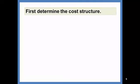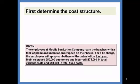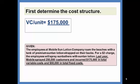Now to do CVP analysis, we're going to first need to determine the cost structure. When you look at this problem and what's given, the costs are given when last year Mobile sprayed 250,000 customers and incurred $175,000 in total variable costs and $50,000 in total fixed costs. So we'll need to first get the variable cost per unit. Last year, total variable costs were $175,000 when 250,000 customers paid, so our variable cost per unit or variable cost per customer is $0.70.